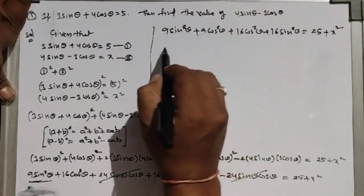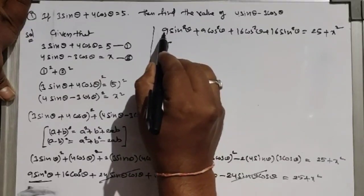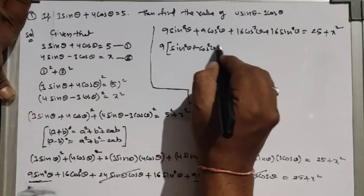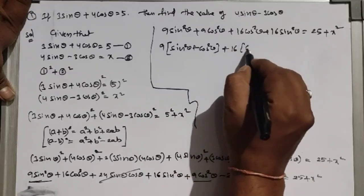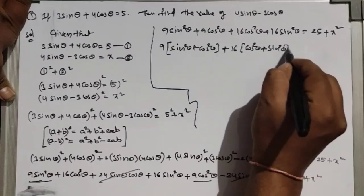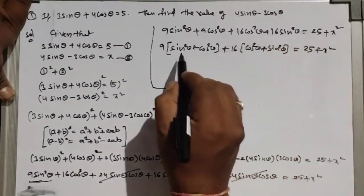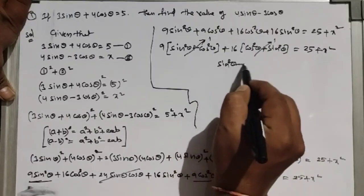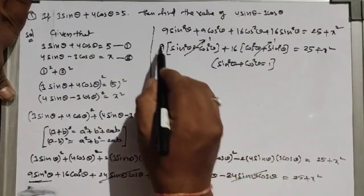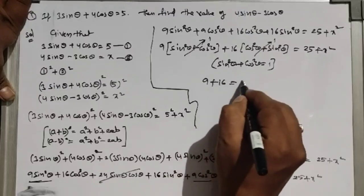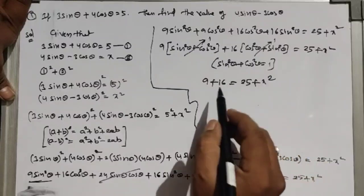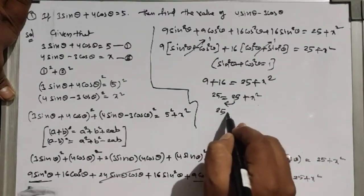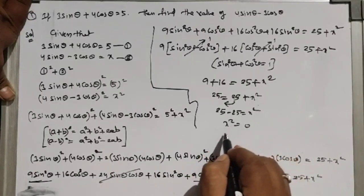Applying the first trigonometric identity: sin²θ + cos²θ = 1. So we get 9·1 + 16·1 = 25 + x², which gives 9 + 16 = 25 + x², that is 25 = 25 + x². Therefore x² = 25 - 25 = 0, so x = 0.